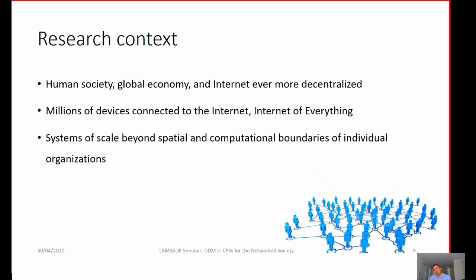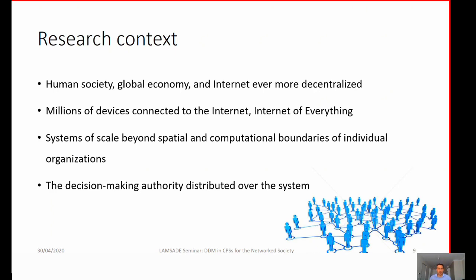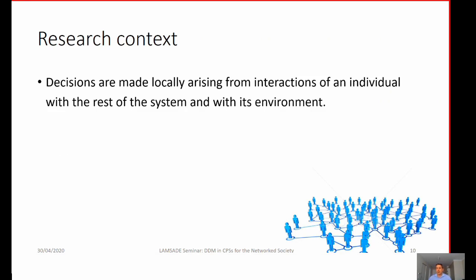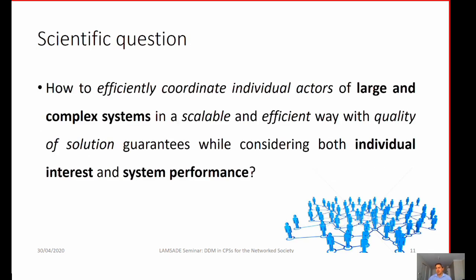These systems are of extremely large scale, going beyond the spatial and computational boundaries of individual organizations. A key characteristic is that decision-making authority is distributed over the system — there is no single decision maker, but multiple decision makers whose interests are often contrary to one another. My main research question is how to efficiently coordinate individual actors of large and complex systems in a scalable way while considering quality-of-solution guarantees, which are often difficult to achieve even theoretically.